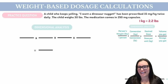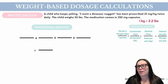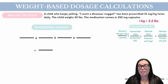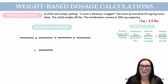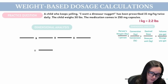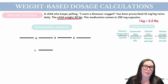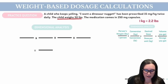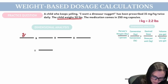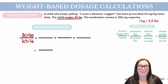Our first question states: a child who keeps yelling 'I want a dinosaur nugget' has been prescribed 15 milligrams per kilogram twice daily. The child's weight is 30 pounds, and the medication comes in 250 milligram tablets. So what are we going to start with? We want to start with our child — this is who we're giving the medication to. We know we have one child and they weigh 30 pounds. So we're going to plug in 30 pounds at the top of our first fraction and one child at the bottom.